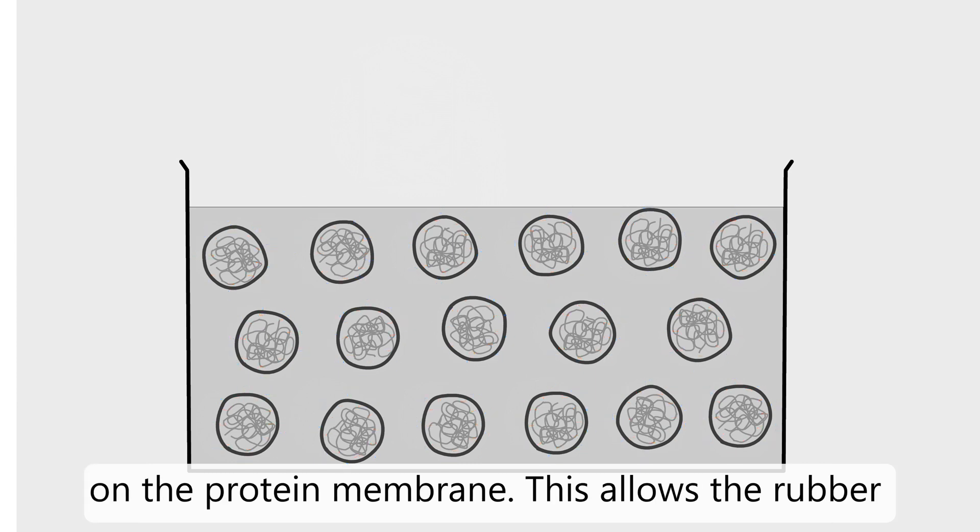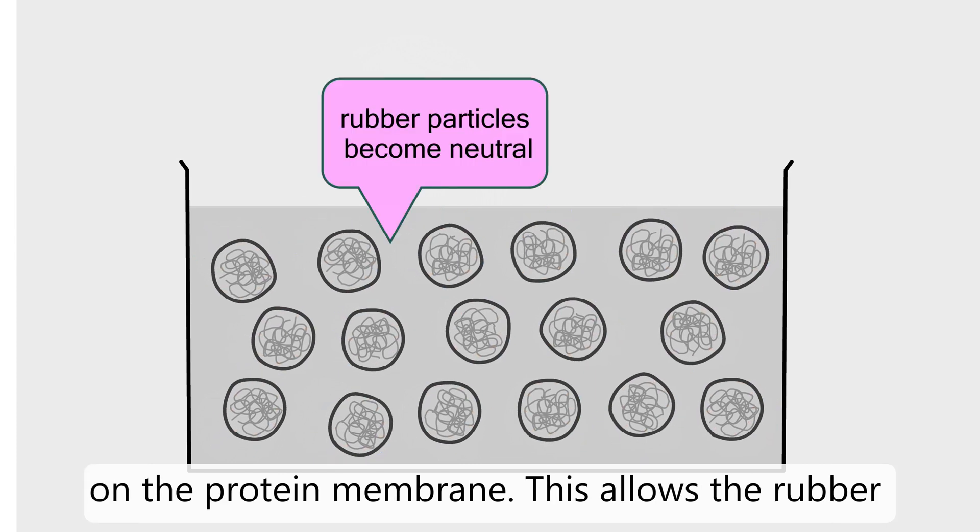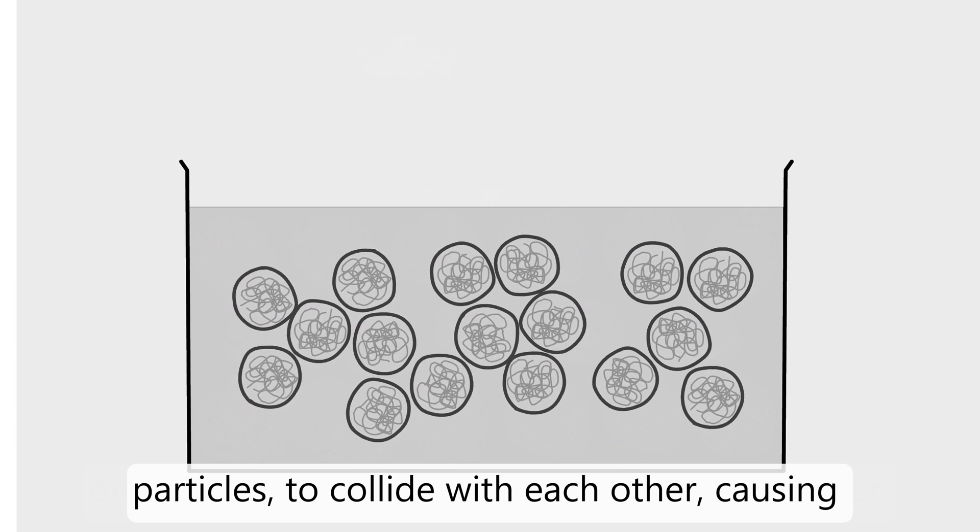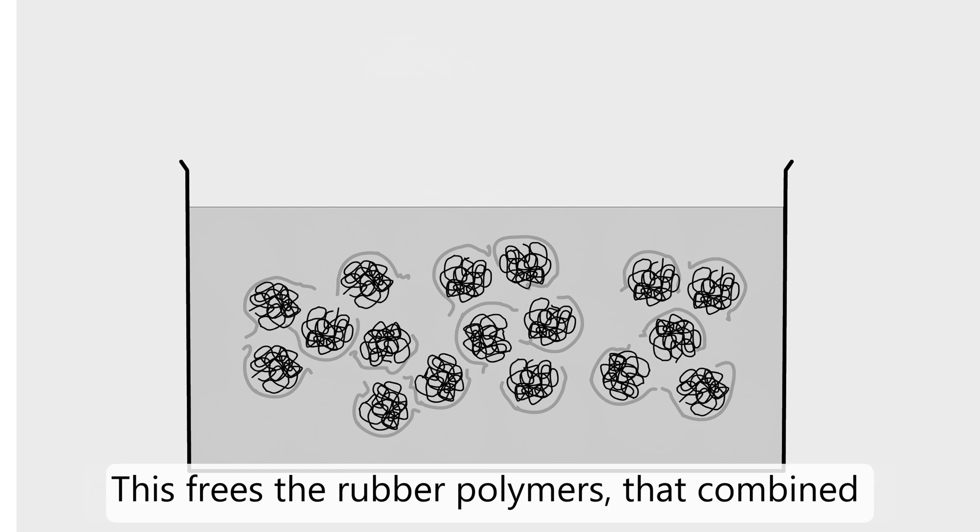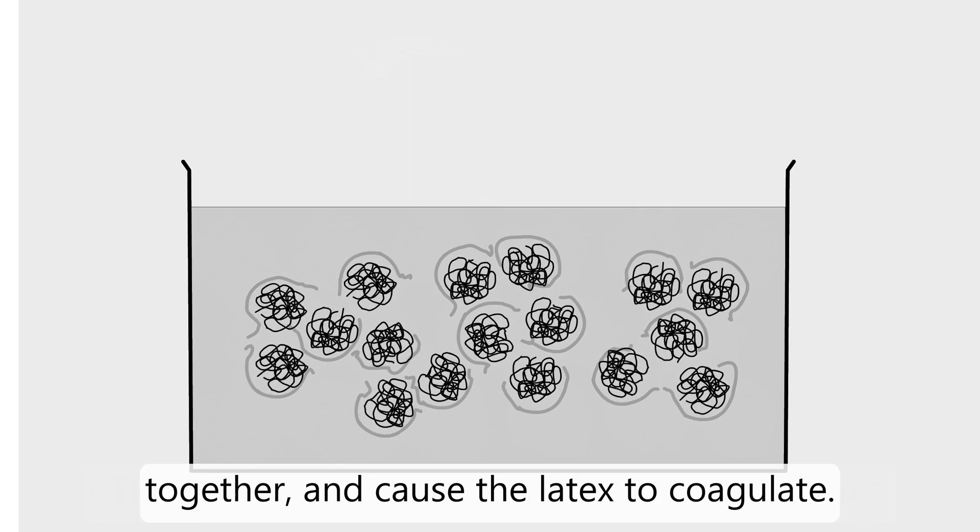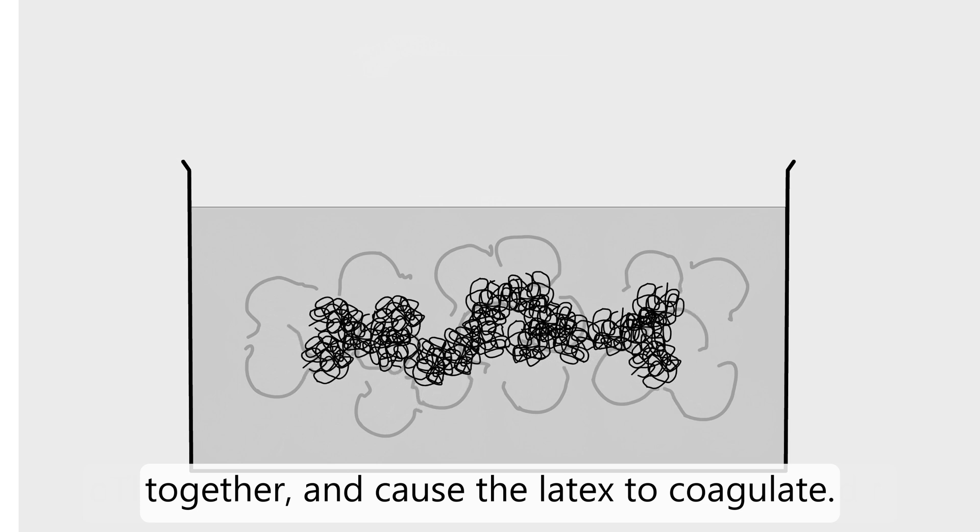On the protein membrane, this allows the rubber particles to collide with each other, causing the protein membrane to rupture. This frees the rubber polymers that combine together and cause the latex to coagulate.